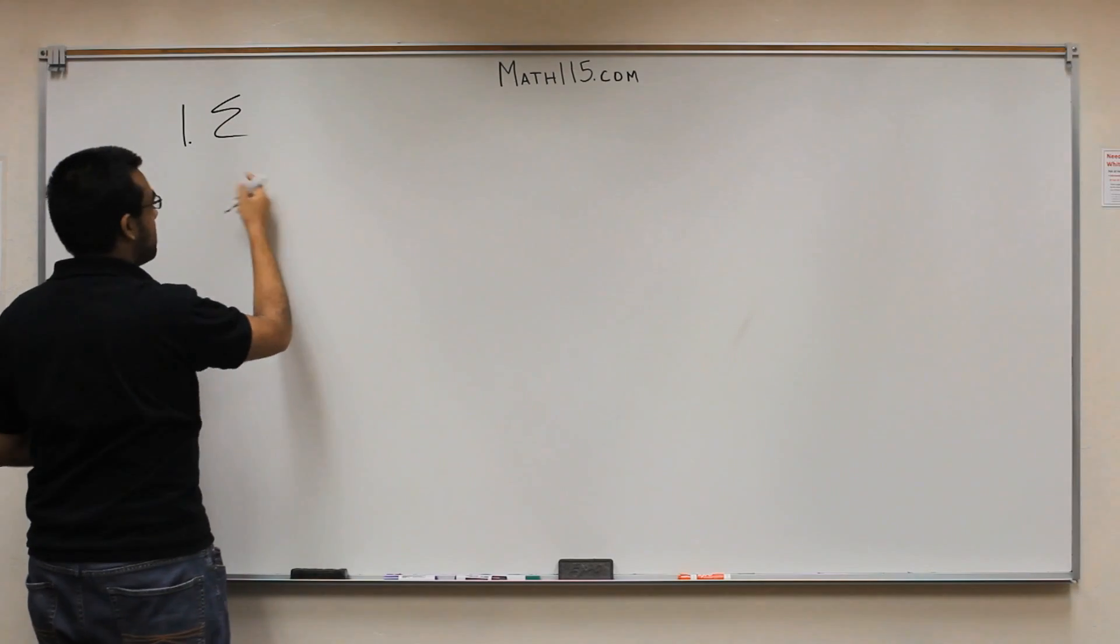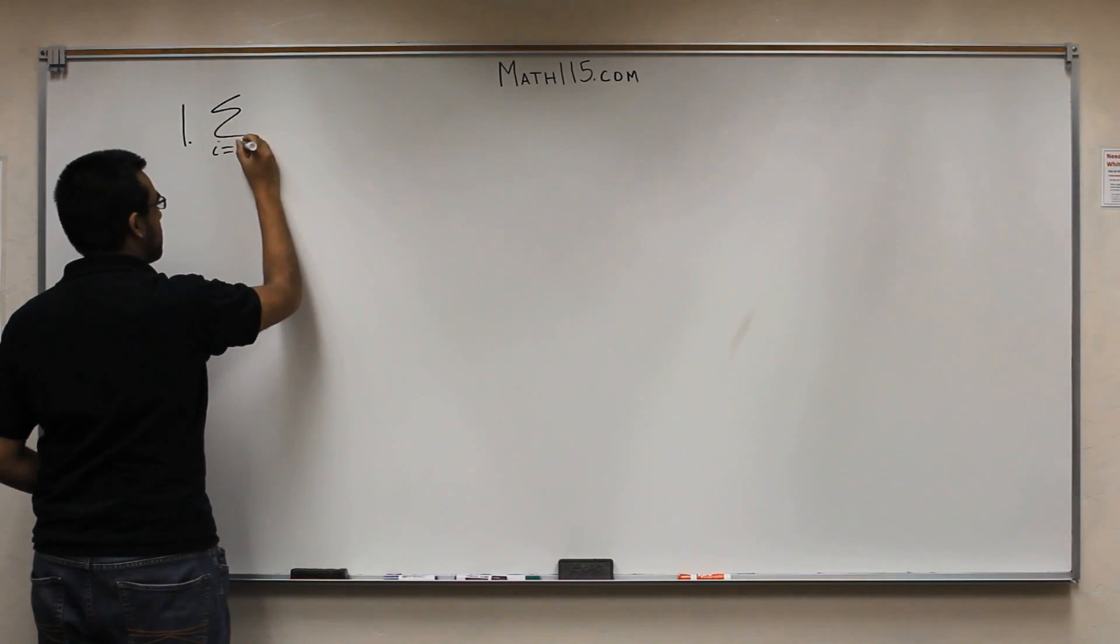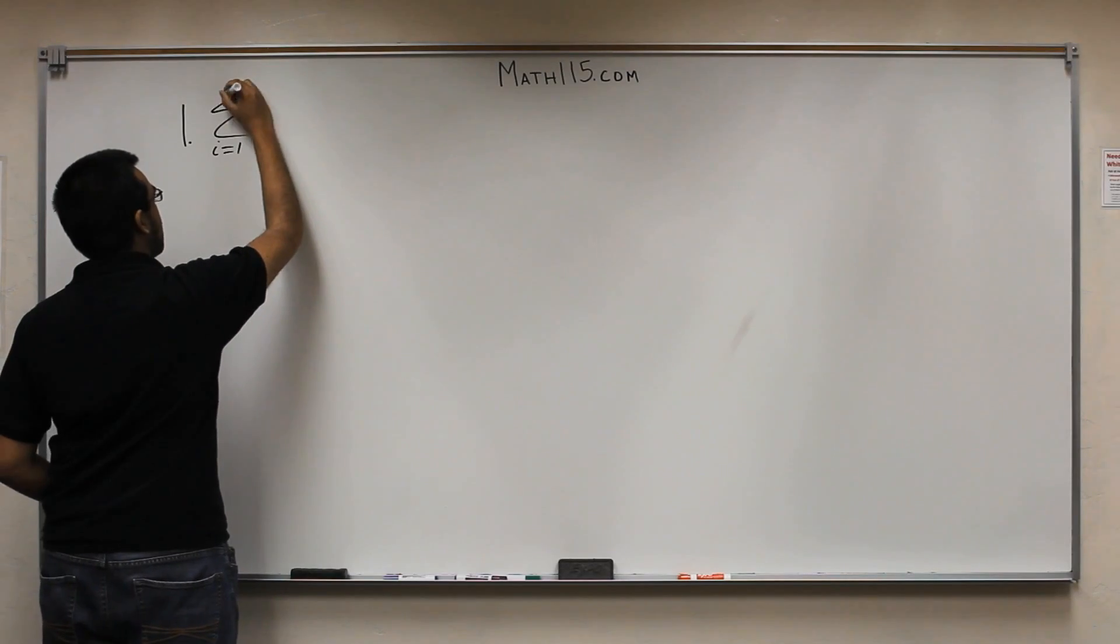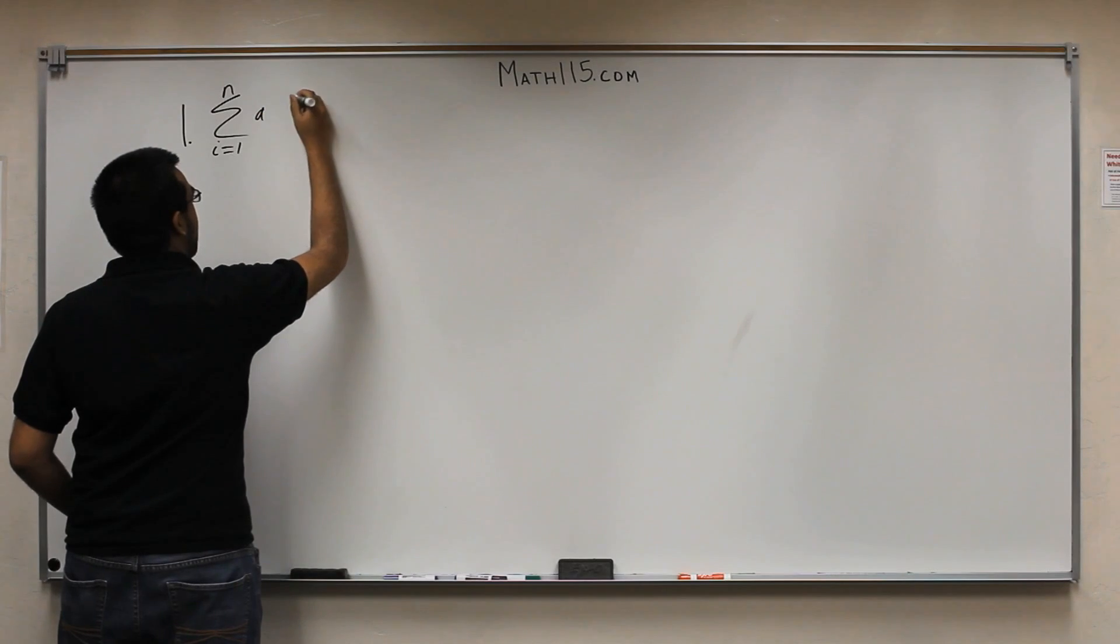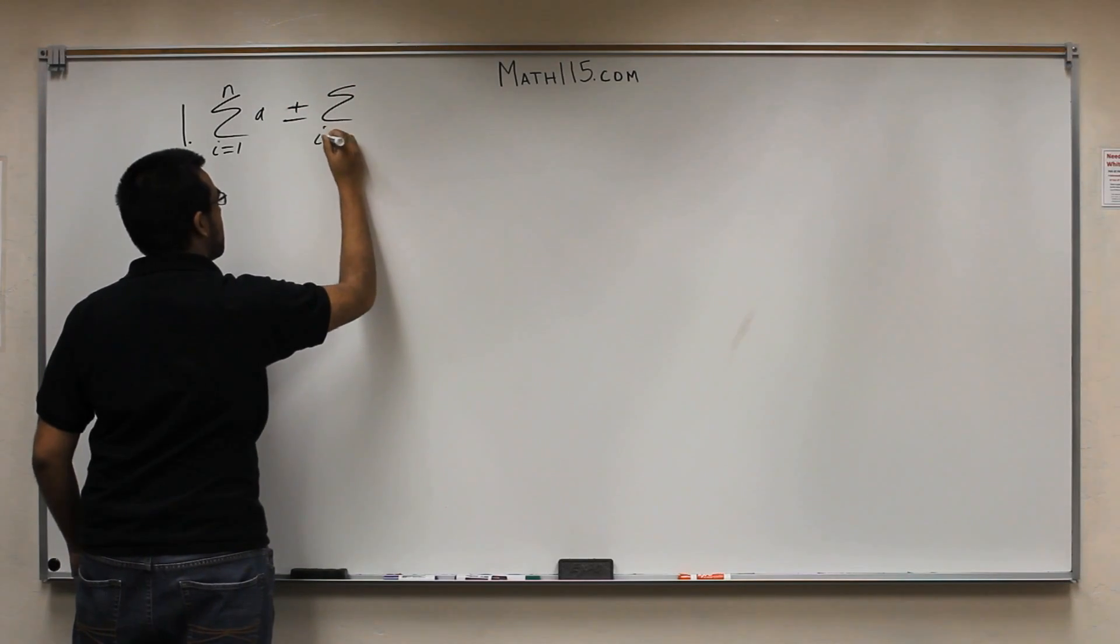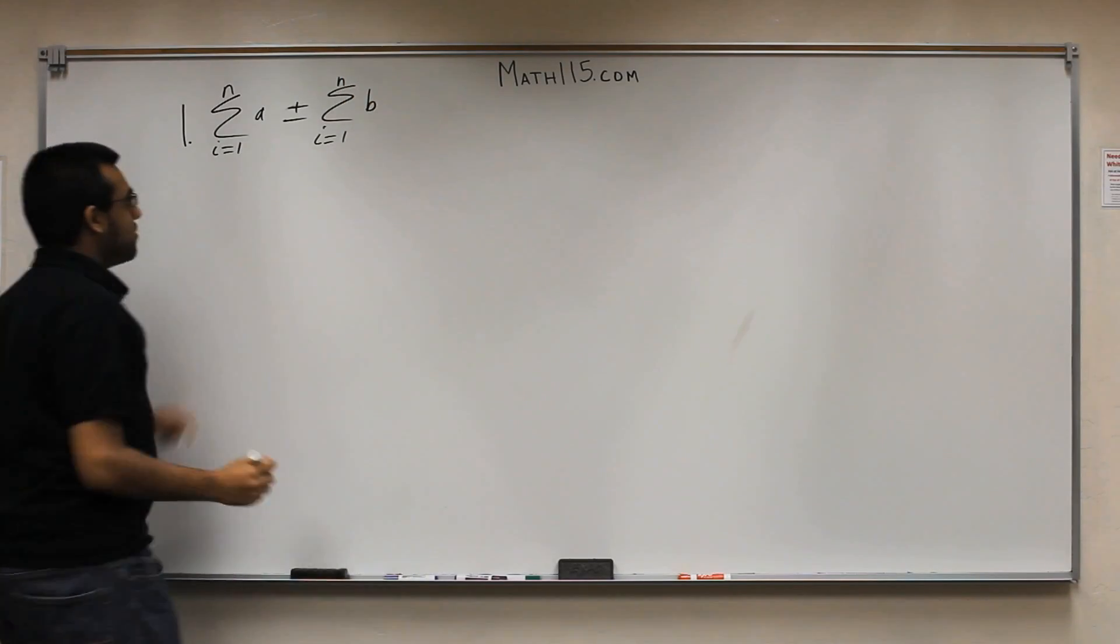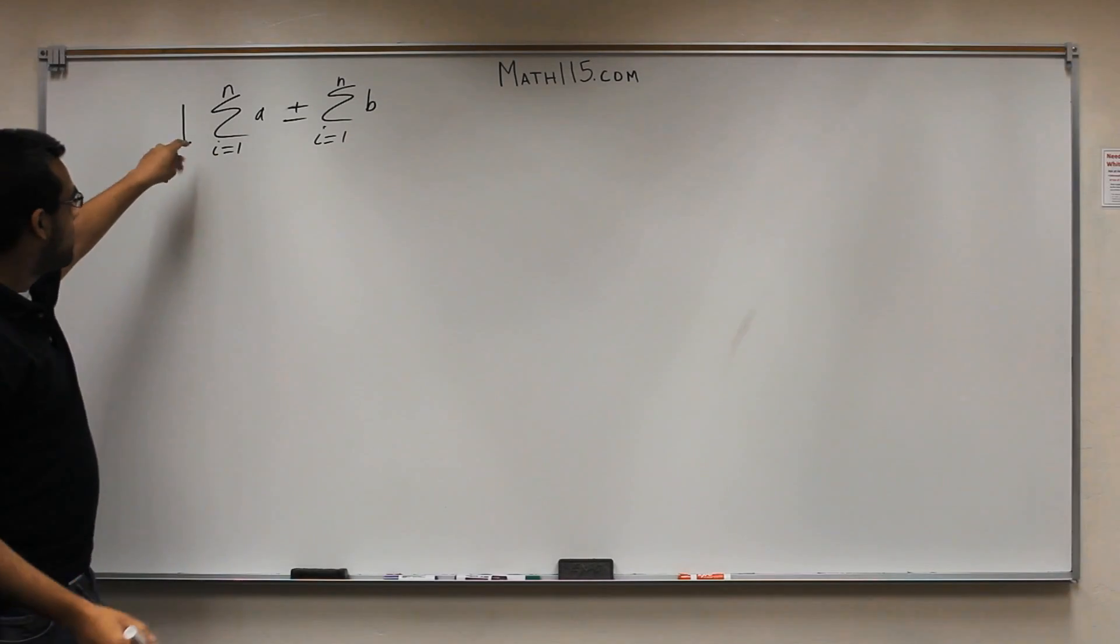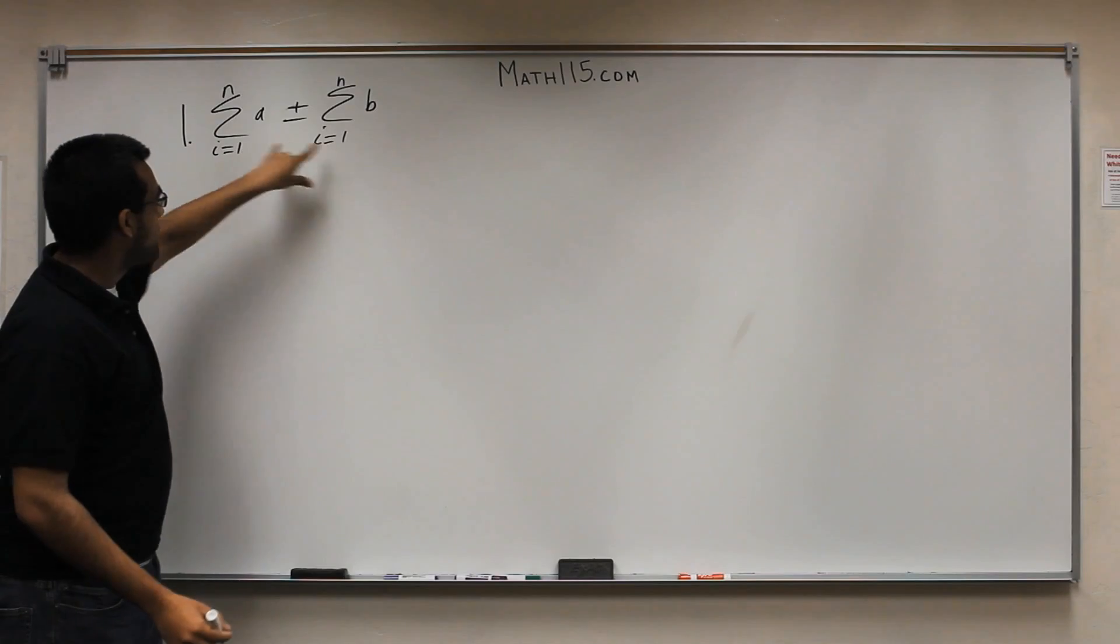If you have some summation, so this is your summation symbol, and I'm just going to pick the variable i, so i equals 1 to, let's just say n, it doesn't matter what the top is. And this is a, and you have another summation that says this. Plus or minus summation i equals 1 and b. So, this is something you might typically see. You might see a summation with the same bottom and same top, but two separate summations.